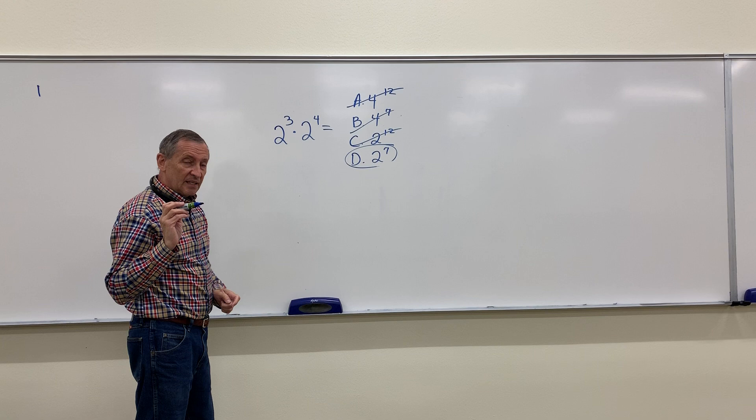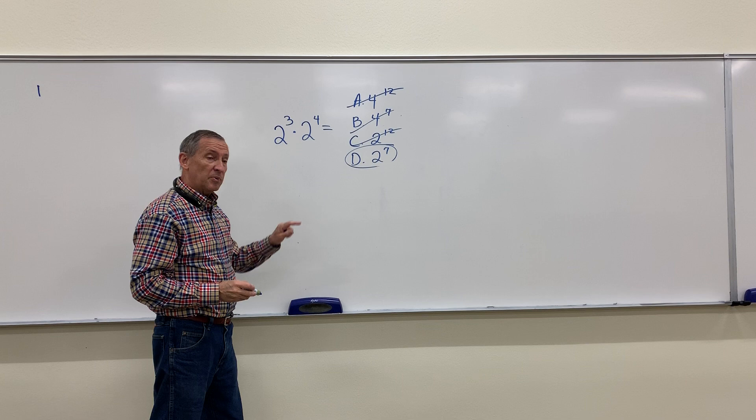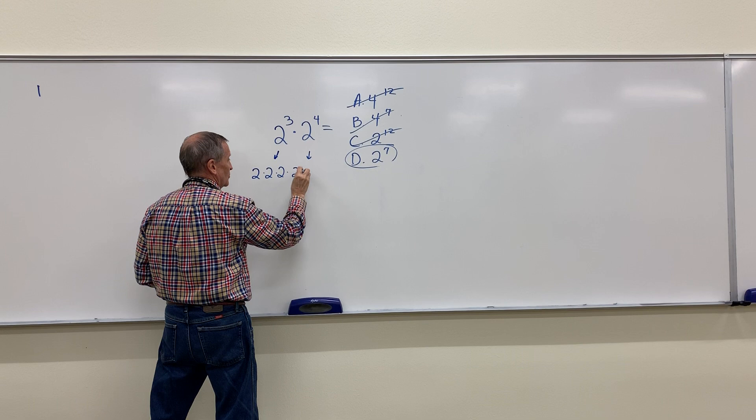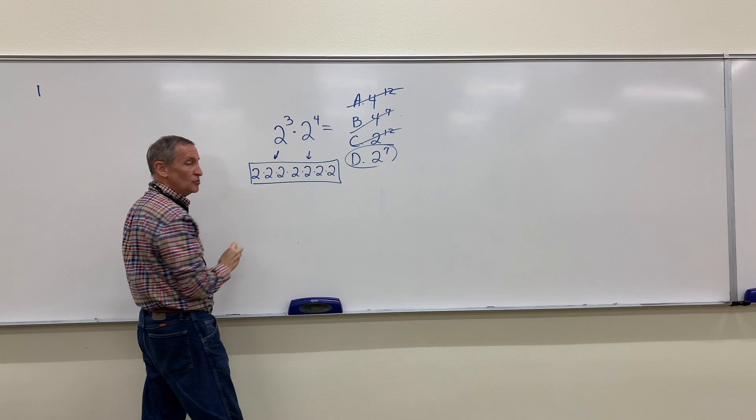But keep this in mind. You're not multiplying 2 times 2. You are multiplying 2's times 2's. You are multiplying, in fact, 3 2's times 4 2's. And the way we say 7 2's multiplied is 2 to the 7th.